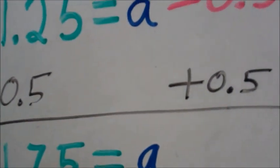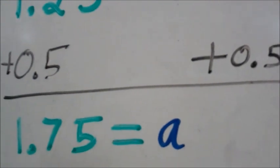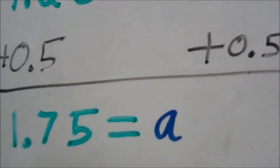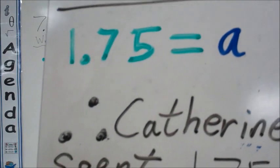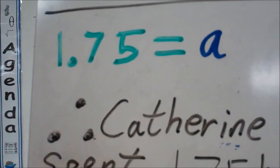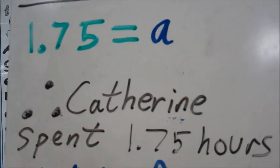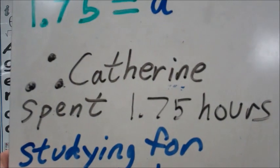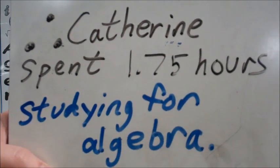Adding 0.5 to both sides, we get 1.75 equals a. And we can say therefore—remember these three dots in math mean therefore—Catherine spent 1.75 hours studying for algebra.